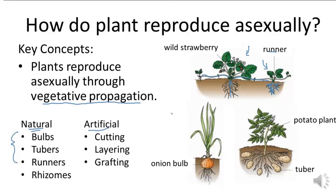Plants reproduce asexually through vegetative propagation as discussed, through natural reproduction and artificial reproduction. Natural reproduction includes bulbs like onion bulbs, tubers like potato tubers, runners, and rhizomes. You can see the runners of wild strawberries — this is the picture of wild strawberry, the best example of a runner. Rhizome is the best example of haldi or turmeric, which we use in our kitchen.